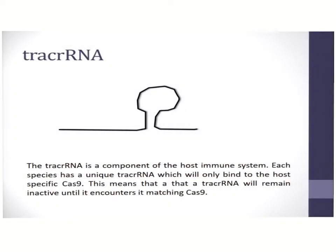TracrRNA is a component of the host immune system. TracrRNA does not exist in eukaryotic systems, which is why every Cas9 enzyme has to be transformed into the eukaryotic system along with its component tracrRNA.